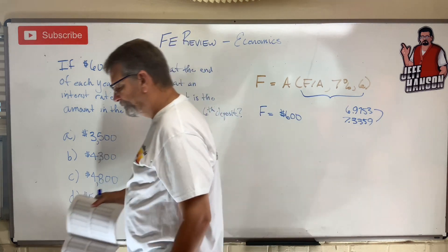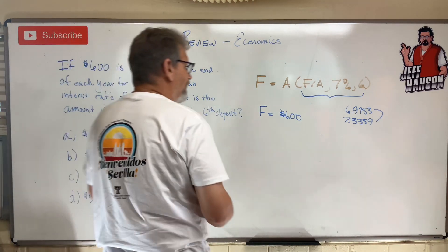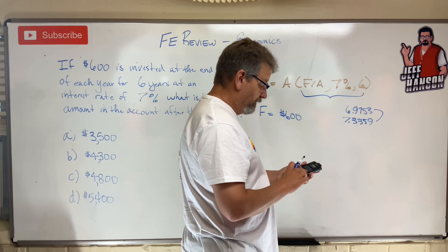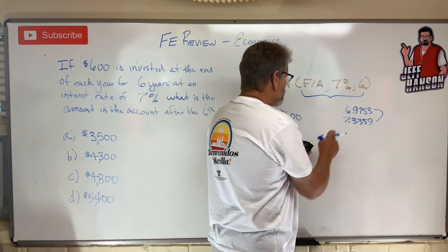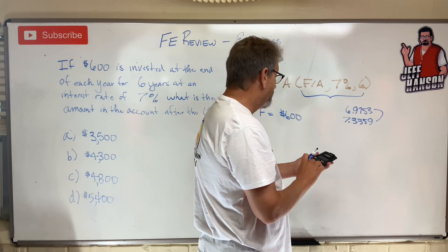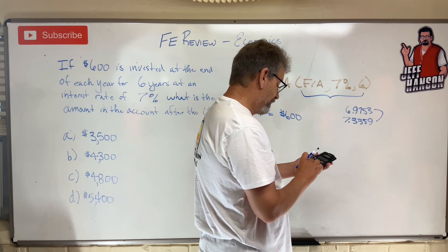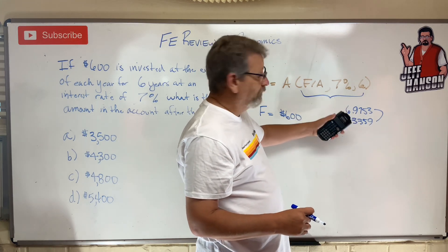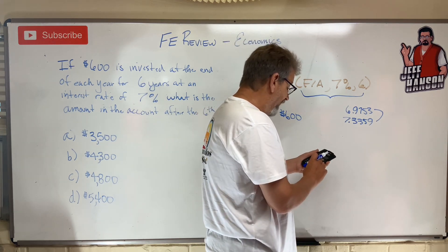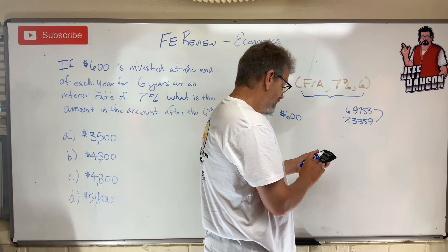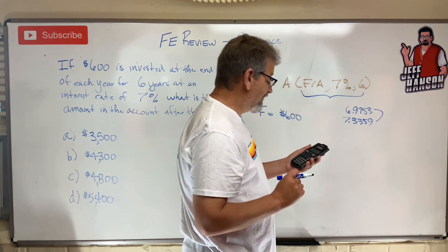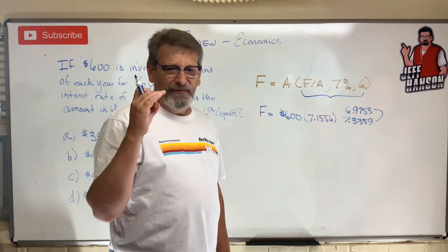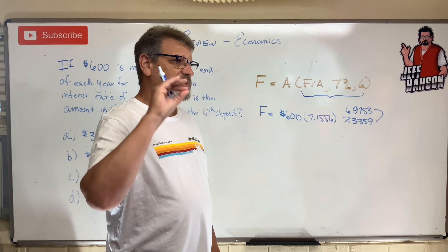How do you interpolate? Get your calculator. The easiest thing is to just subtract: 7.3359 minus 6.9753 equals 0.3606. Divide that by 2 — that's the halfway point — which gives 0.1803. Then add 0.1803 to 6.9753, and that gives me 7.1556. That's my interpolated factor.